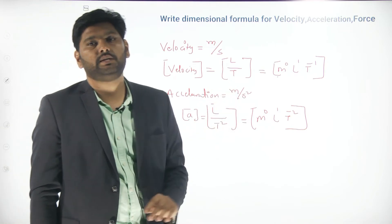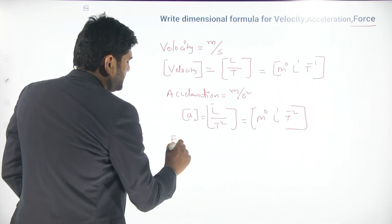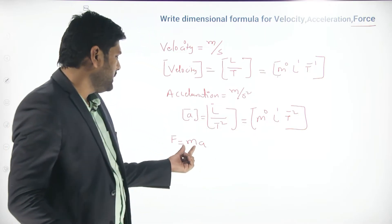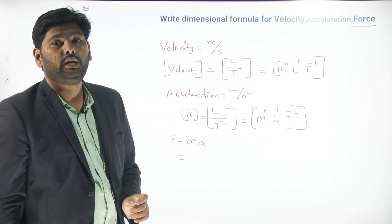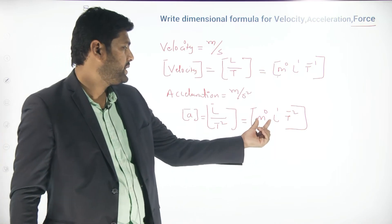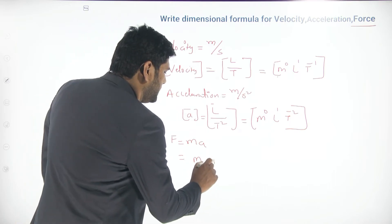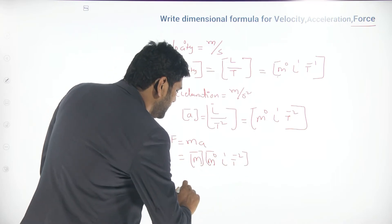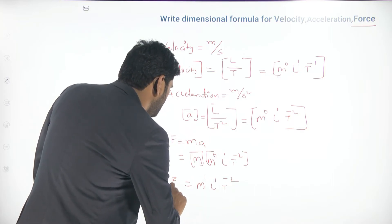Now let us find the dimension formula for force. By Newton's second law, force equals mass into acceleration. Mass is a fundamental quantity written as M, and we just found acceleration = M⁰ L¹ T⁻². So finally, force = M¹ L¹ T⁻² — this is the dimension formula for force.